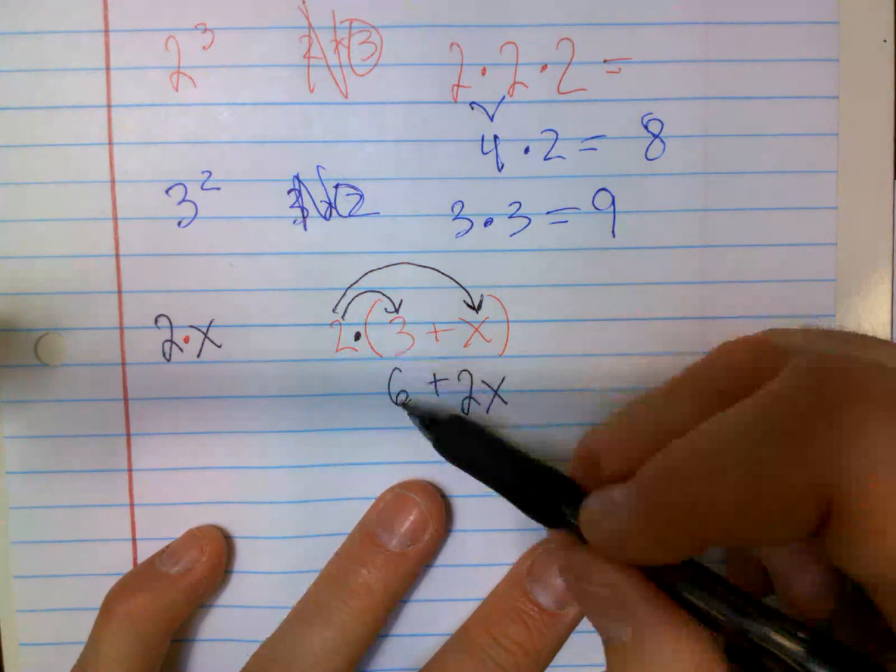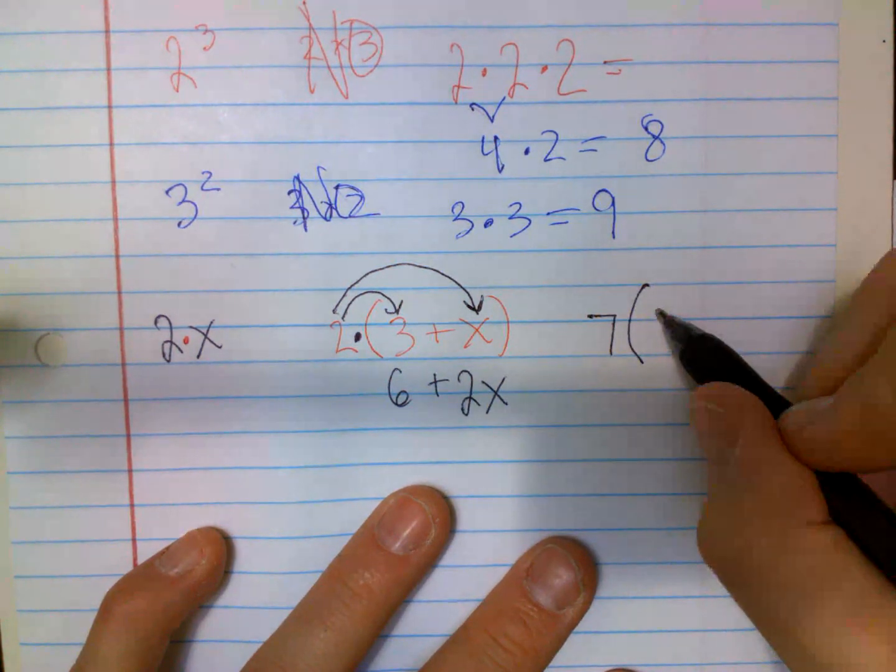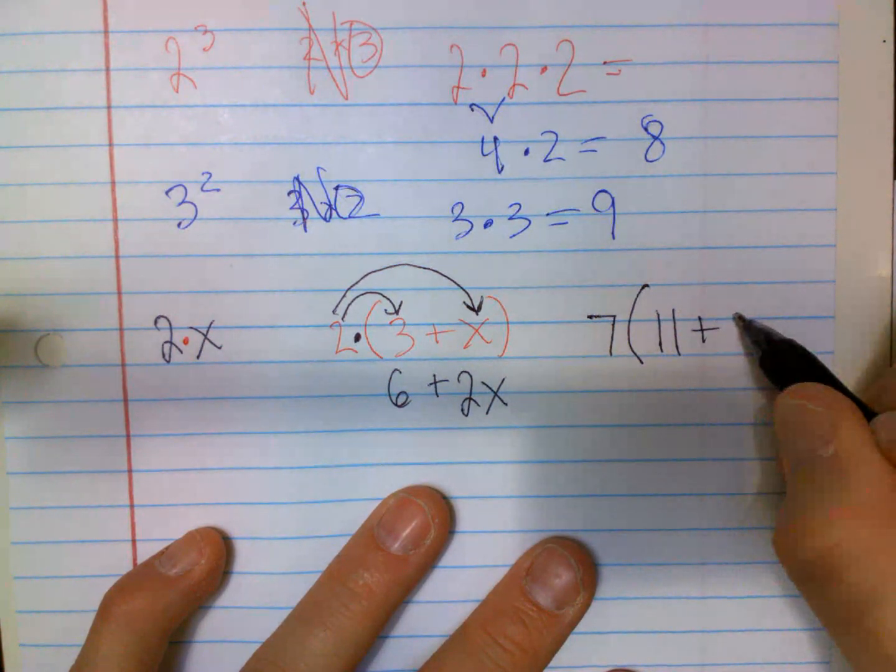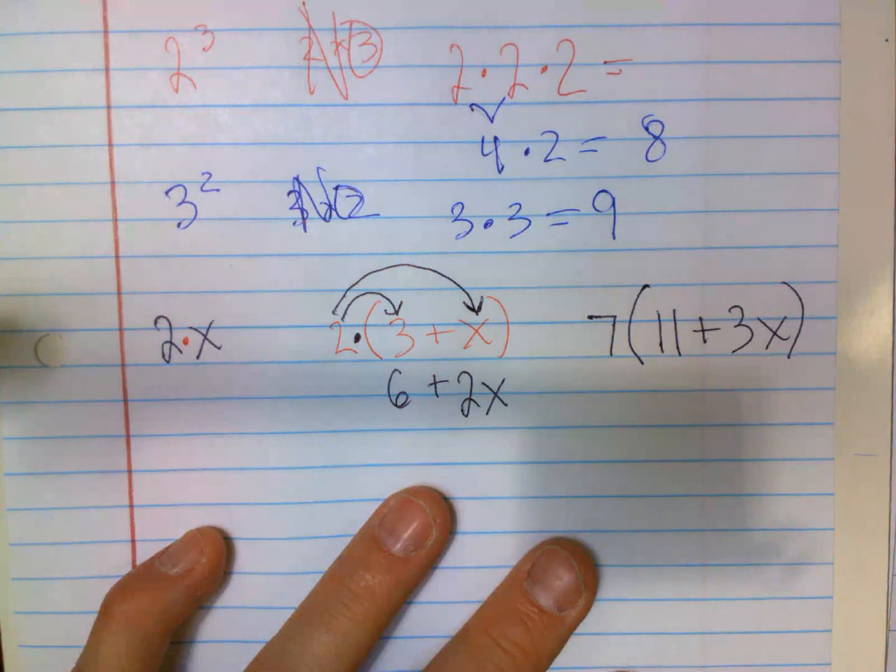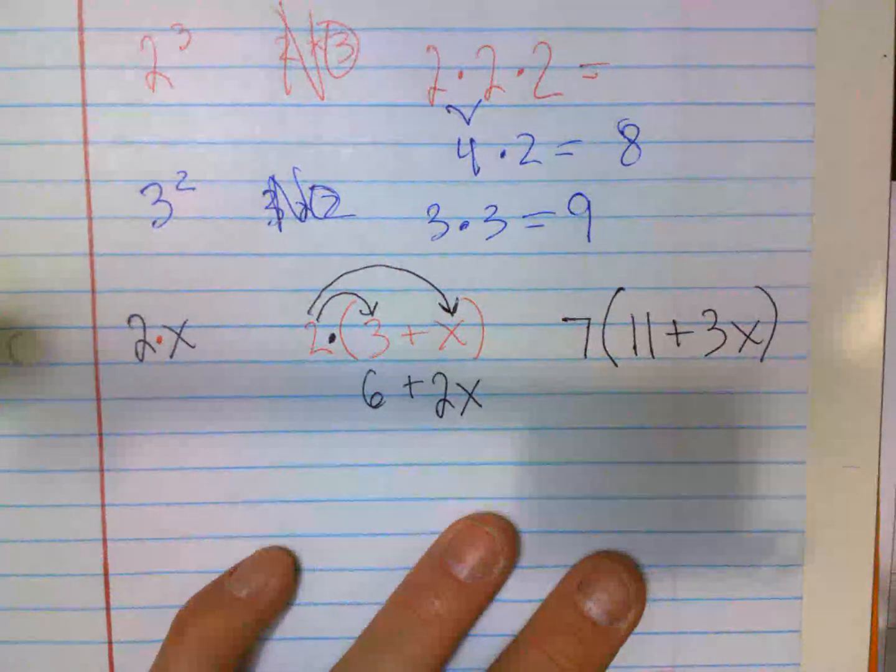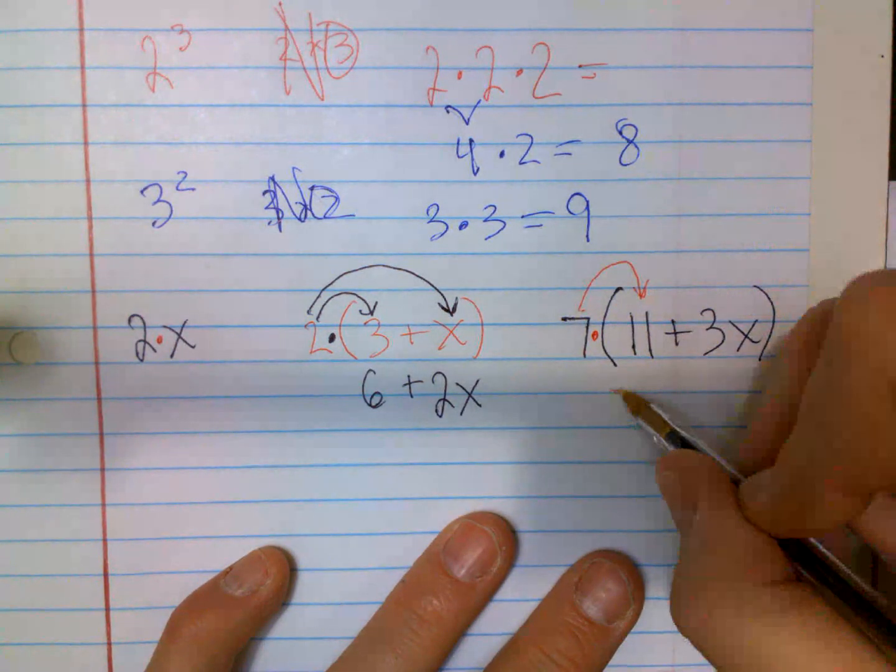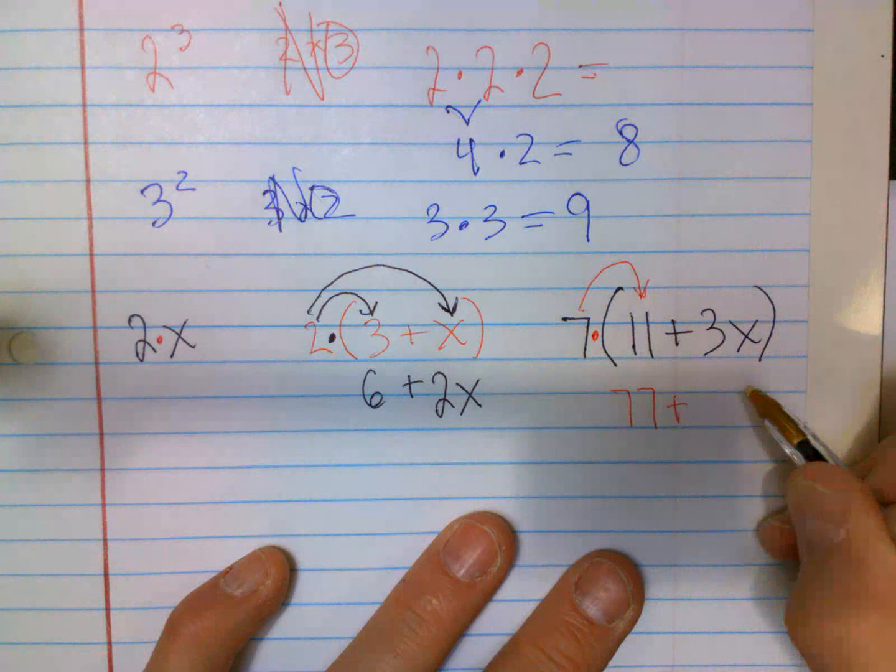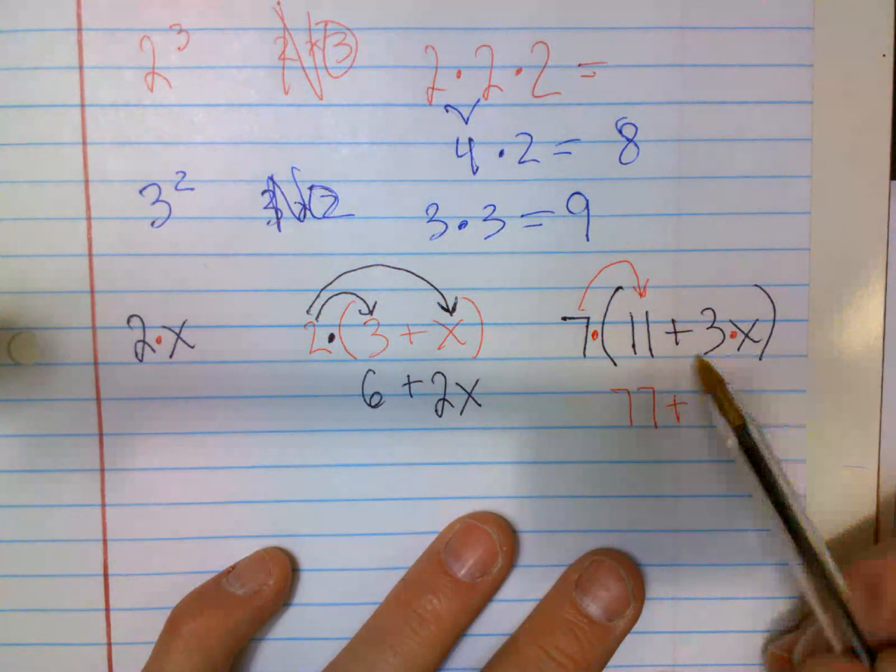Just got to be careful to do your multiplication properly. 7(11 + 3X). Watch this. I don't think they'll give it to you quite like this. That means times. 7 times 11 is 77, plus do they already got a number next to the X, so do I do 7 times 3 and 7 times X?